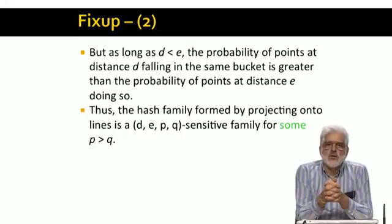For some probabilities p and q, such that p is greater than q. Starting with this family, we can amplify the probabilities to make p as close to 1 as we like, and q as close to 0 as we like, while still allowing d and e to be as close as we like, as long as e is strictly larger than d.